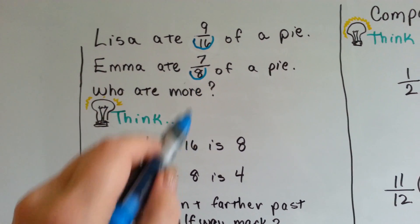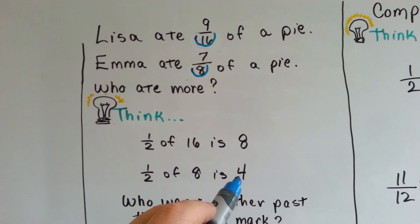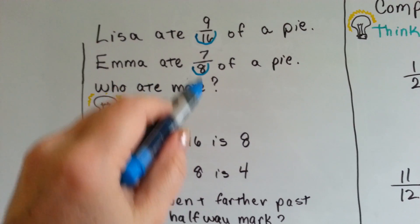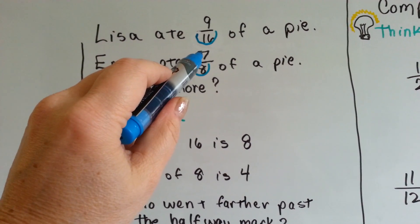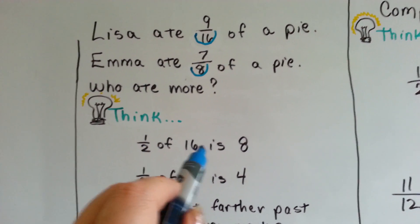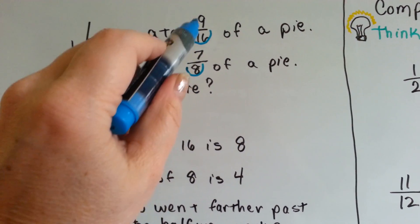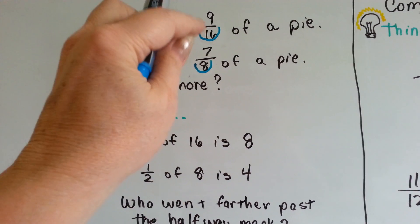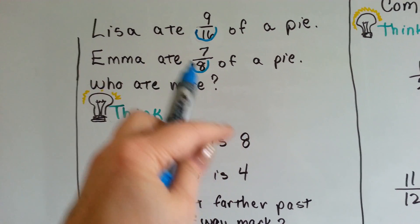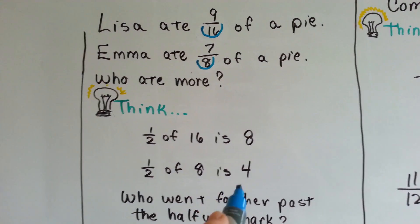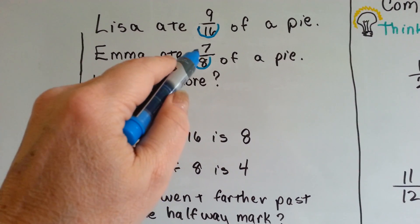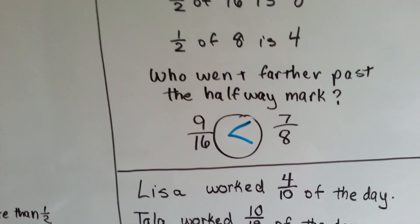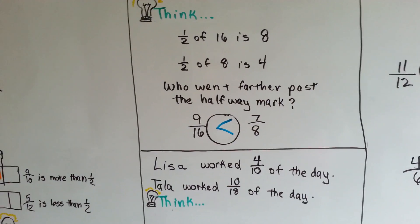Half of 8 is 4. Did Emma eat more than half of the pie? If half is 4, she ate 7. Wait a minute. This half of 16 is 8, and Lisa ate 9. That's just like one little jump more than half, isn't it? That's just one little piece more than the halfway mark, that 9. It's just one more than 9. But Emma, the halfway mark was 4, and she ate 7. So guess what? 7 eighths is greater than 9 sixteenths, because it's farther past the halfway mark.